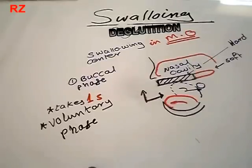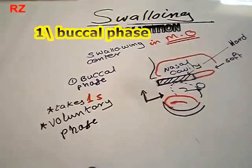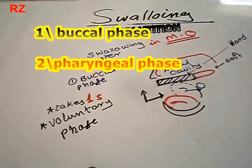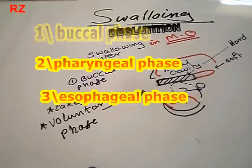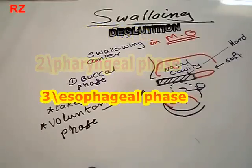Swallowing is subdivided into three phases: the buccal phase, the pharyngeal phase, and the last phase, the esophageal phase.